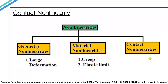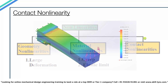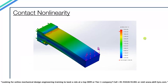Apart from geometric and material nonlinearities, we also have contact nonlinearity, which is caused by the changing status of contact throughout the simulation. The cantilever beam with the support bracket discussed earlier is a perfect example of contact nonlinearity.